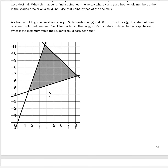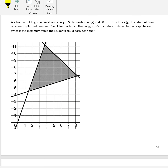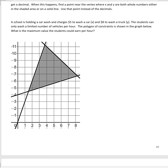We're given the polygon of constraints already, so for this question we don't have to write the inequalities or graph them — they're already graphed for us, which is fantastic. The polygon and shading are already shown. We know the shaded area is our region of interest. There are three corners: let's call them A, B, and C.